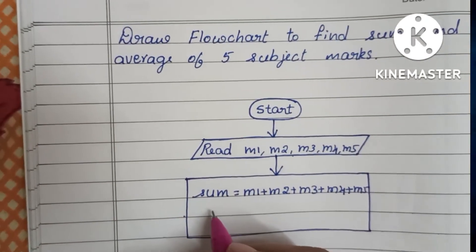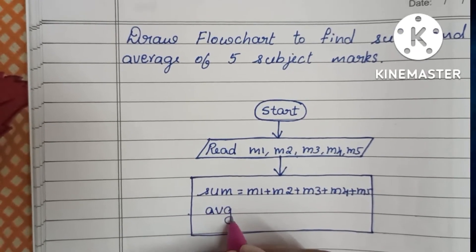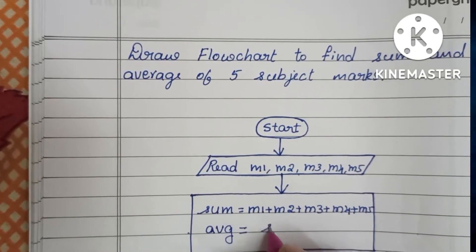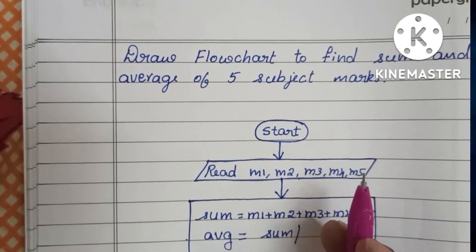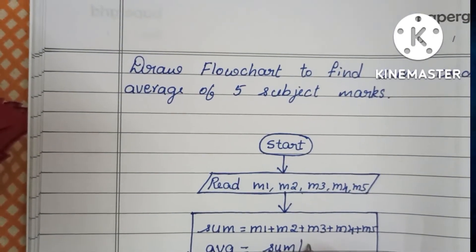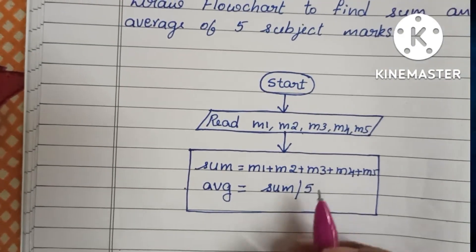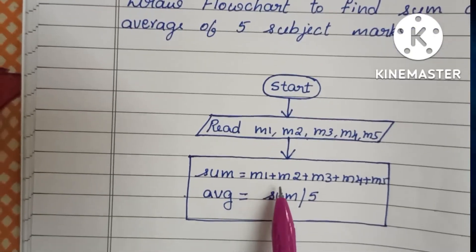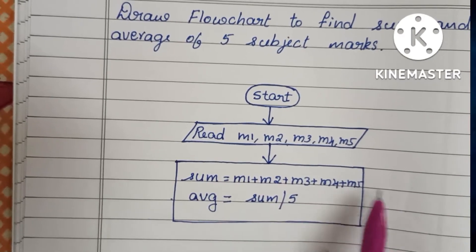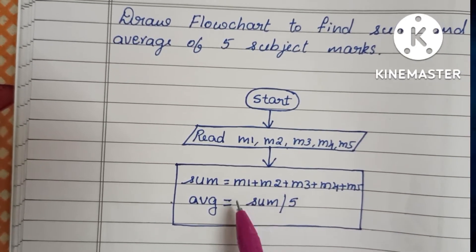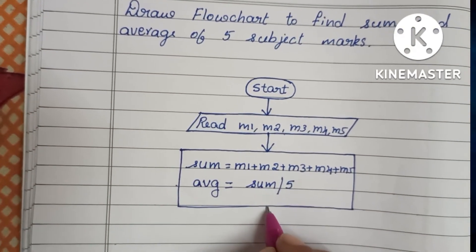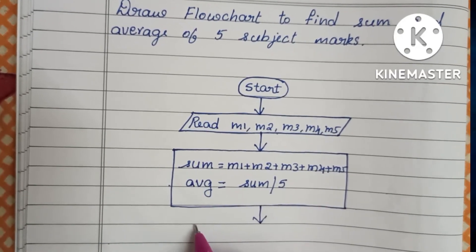Next we have to find the average. The formula to find average is sum divided by the number of subjects. Since the number of subjects is 5, average is equal to sum divided by 5. So our two process steps are: sum = m1 + m2 + m3 + m4 + m5, and average = sum / 5.